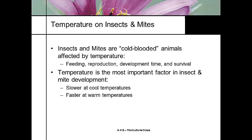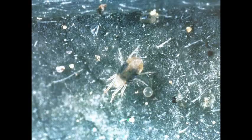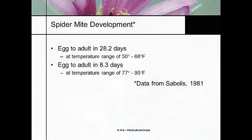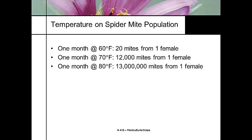Insects and mites are cold-blooded animals — their feeding response, reproductive response, development time, and survival are all based on temperature. They're slower when it's cold and faster when it's warm. The two-spotted mite takes about 28.2 days to go from egg to adult at 50–68°F, but only 8.3 days at 77–95°F. One female at 60°F can produce 20 progeny; at 70°F, 12,000; at 80°F, 13 million progeny. Hot, dry conditions set you up for a mite problem.